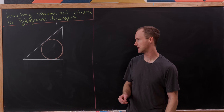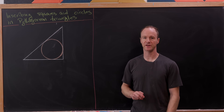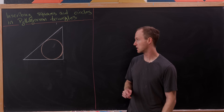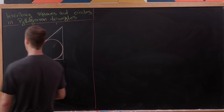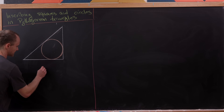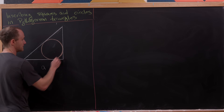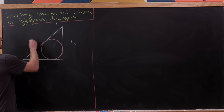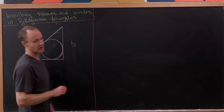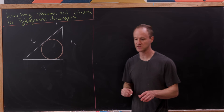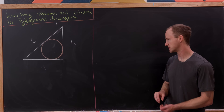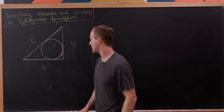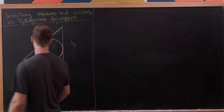Given that we have a Pythagorean triangle — which means it's a right triangle with integer sides — let's start with a circle. We've got our right triangle, and let's assume that the side length here is a, the side length here is b, and then the side length over here is c, where of course a² + b² = c².